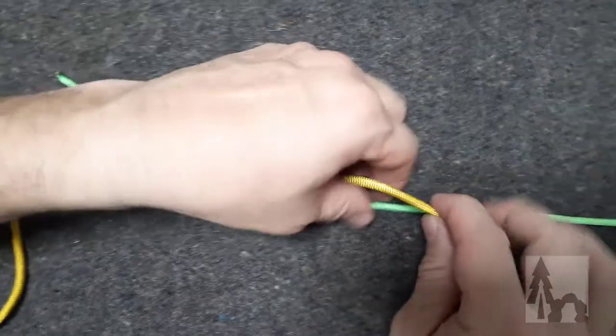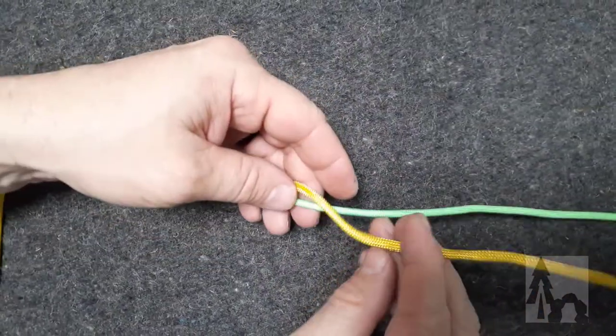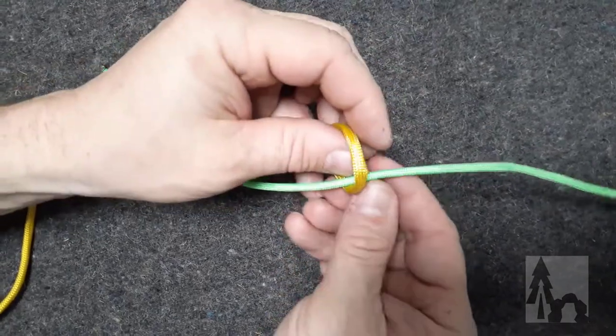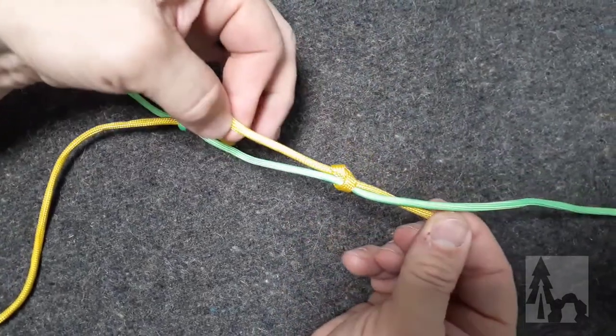Then I'm going to go over here and I'm going to do the same thing with the yellow. I'm just going to tie a simple overhand knot around the green cord.